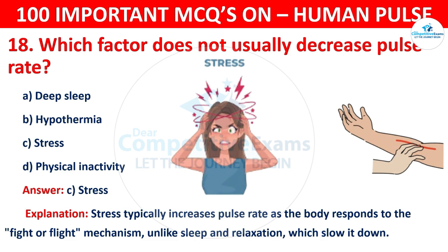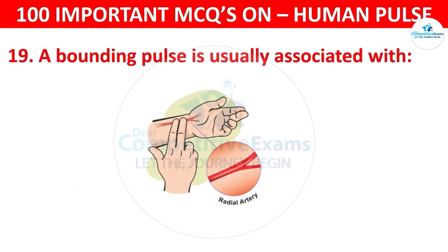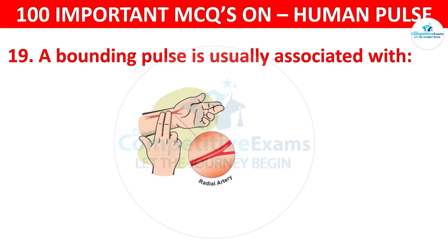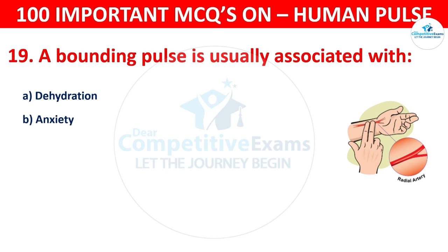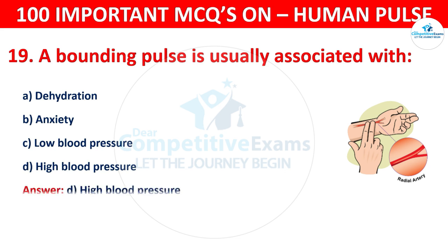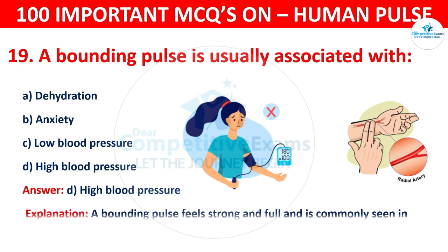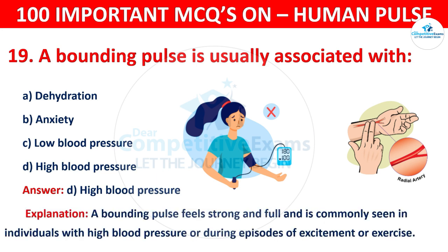Question number 19: A bounding pulse is usually associated with — your options are: Dehydration, Anxiety, Low blood pressure, or High blood pressure. The correct answer is D, that is high blood pressure. A bounding pulse feels strong and full and is commonly seen in individuals with high blood pressure or during episodes of excitement or exercise.